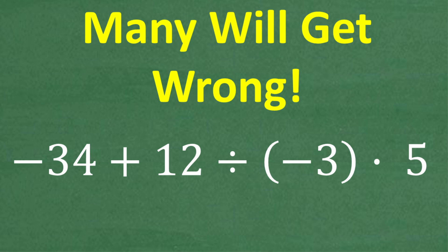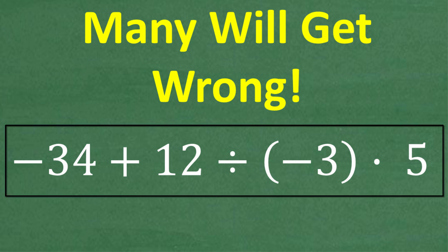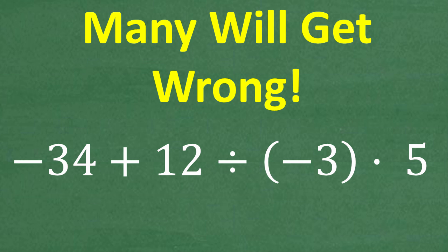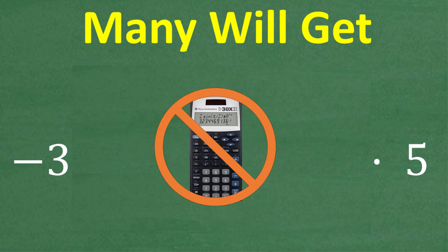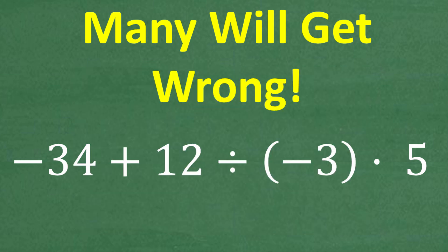Let's go: negative 34 plus 12 divided by negative 3 times 5. The only rule here is no calculator. If you can figure this out, go ahead and put your answer into the comment section, and then I'll walk through exactly how to solve this problem without the aid of a calculator.